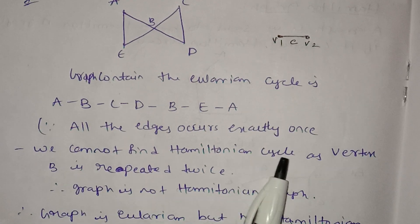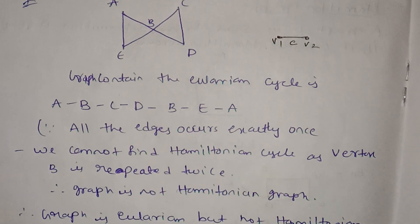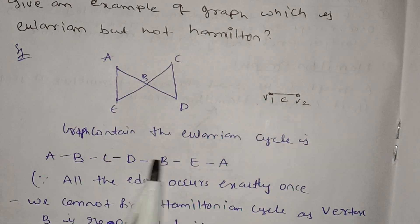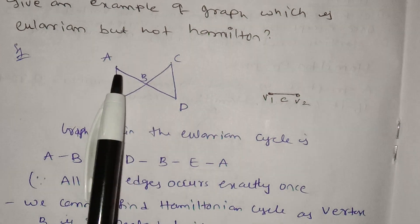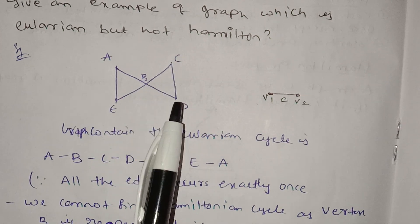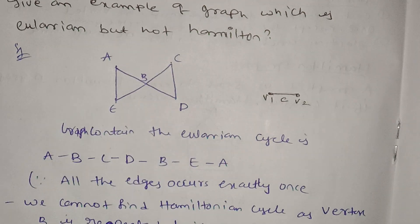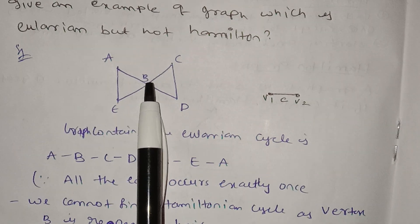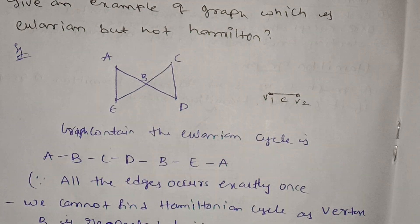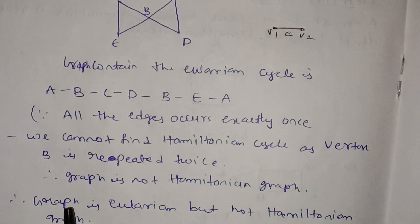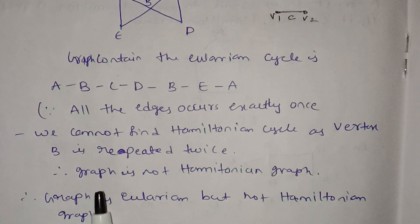We cannot find a Hamilton cycle because vertex B is repeated twice. B and A are not repeated properly here. The vertices A, B, C, D, E, B, E show that B appears more than once — so the graph is not Hamiltonian. The graph is Eulerian but not Hamiltonian.